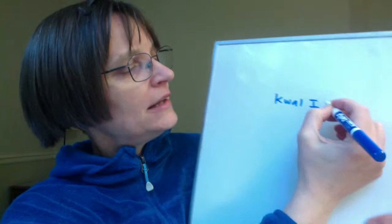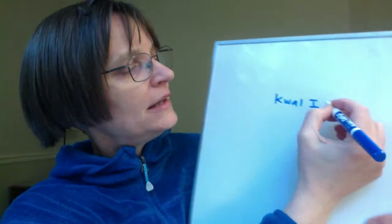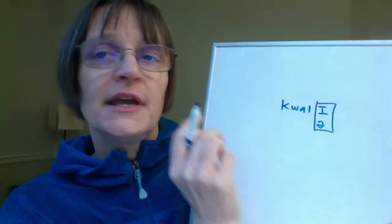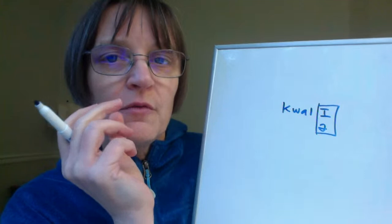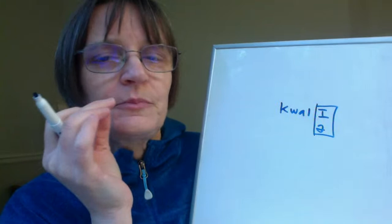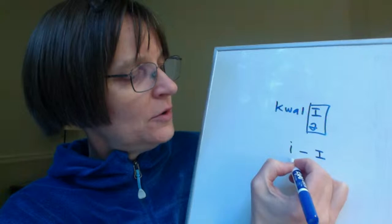In those unstressed syllables, these are almost interchangeable. What they represent is that we're very short and lax on those vowels. Often when it's the letter I, we will say it more as an 'ih' or 'ee.' And if it's a letter A or U or O, we'll say it more as an 'uh' sound.